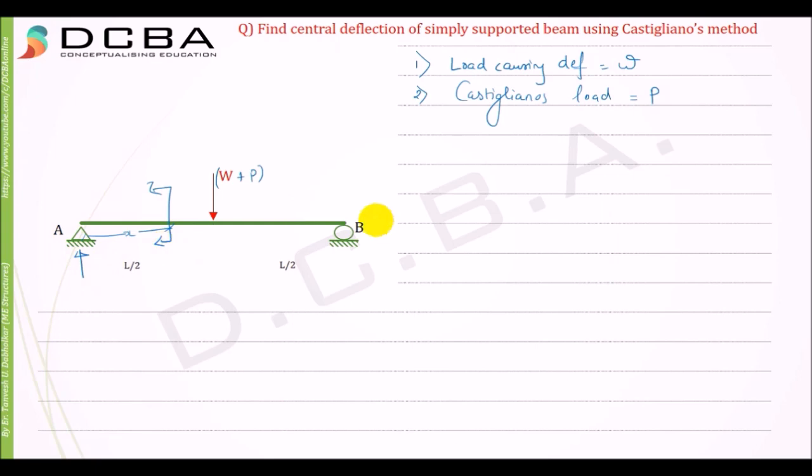First, let us find the reactions. Since it's simply supported and symmetrically loaded, the reactions are W plus P by 2. And here also it will be W plus P by 2 into X.